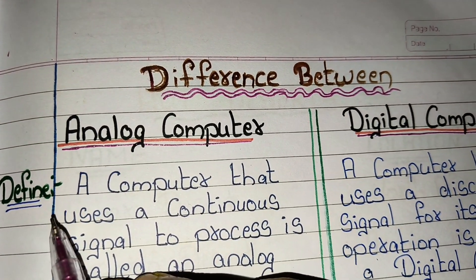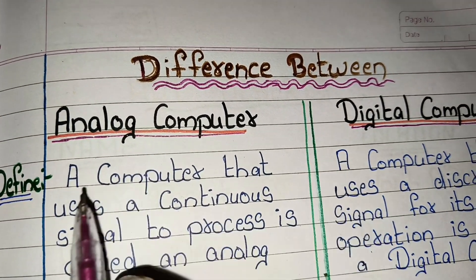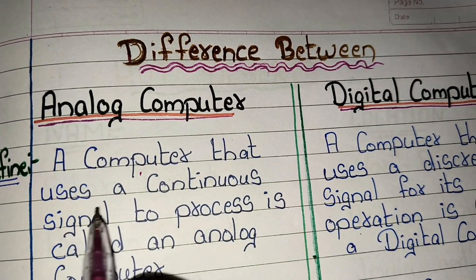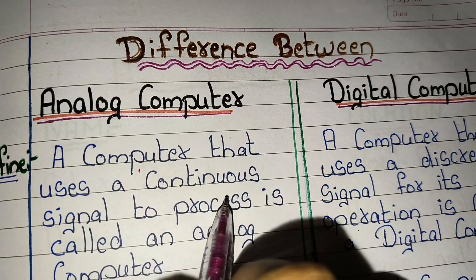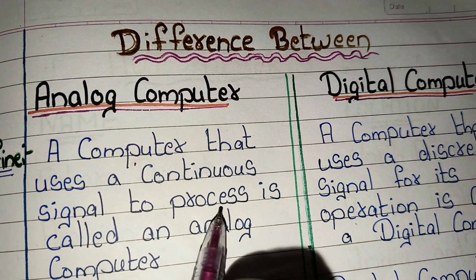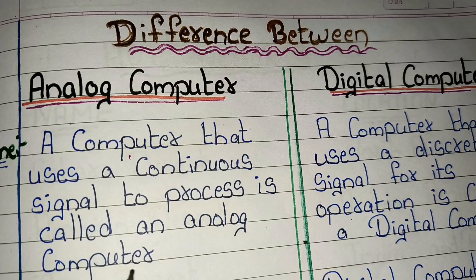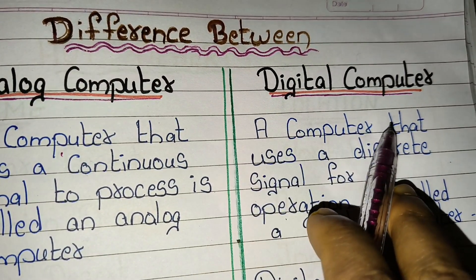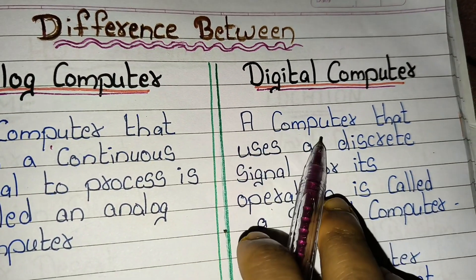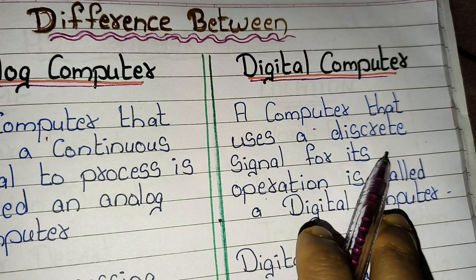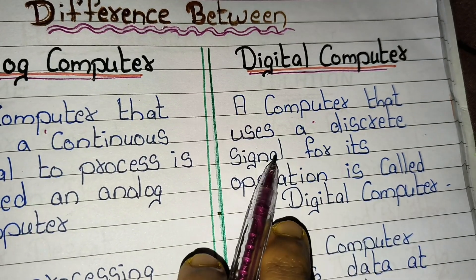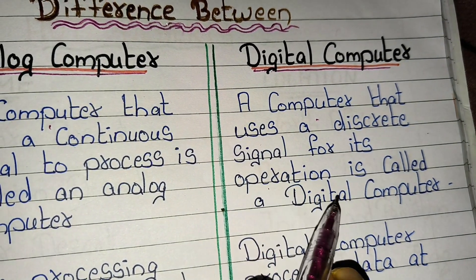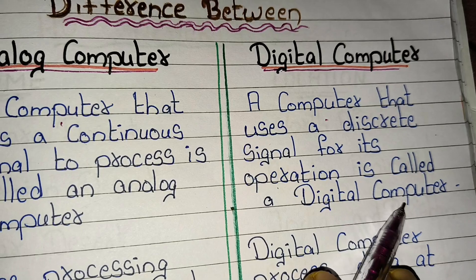First, the definition. A computer that uses a continuous signal to process is called an analog computer. A computer that uses a discrete signal for its operation is called a digital computer.